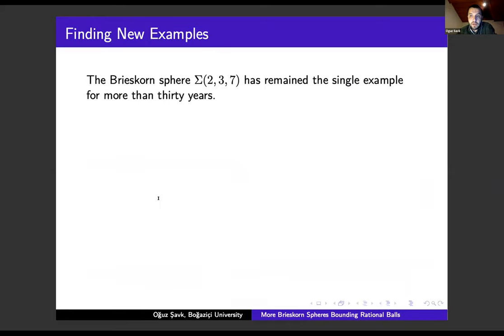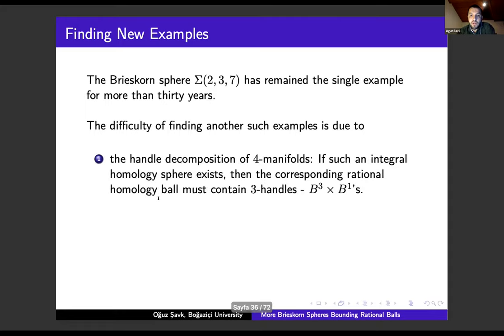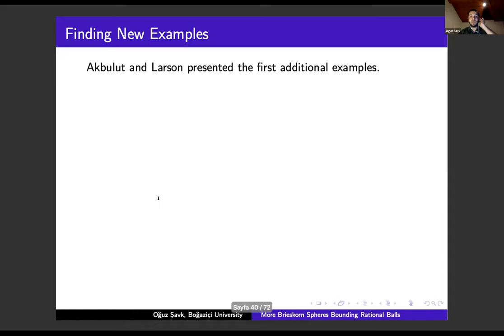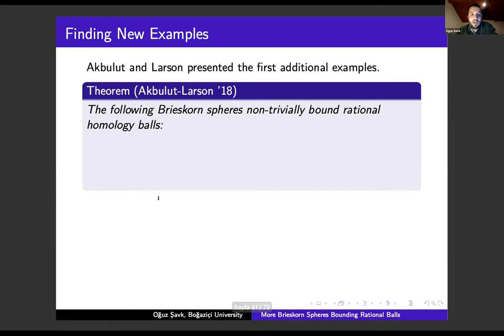This sphere has remained the only example for more than 30 years. The difficulty of finding such examples is due to the handle decomposition of 4-manifolds and the complexity of Kirby calculus. There is no general method for finding such examples—almost all proofs present their originality. Akbulut and Larson recently presented the first additional examples showing that the following Brieskorn spheres non-trivially bound rational balls.